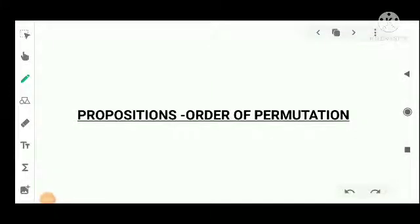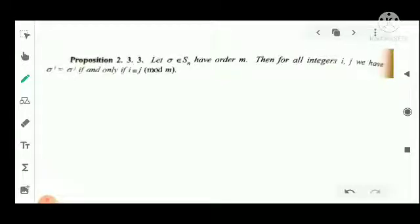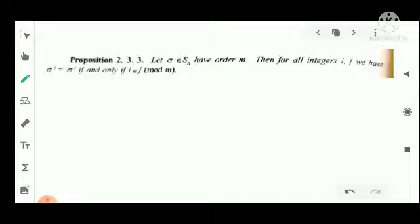Propositions related to order of permutation. There are two important propositions. First: let sigma belong to S_N and have order M. Then for all integers i and j, sigma raised to i equals sigma raised to j if and only if i is congruent to j mod M. That is, we have a permutation sigma in S_N such that the order of sigma equals M, and sigma raised to M equals the identity.